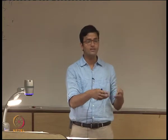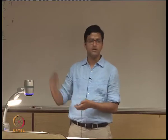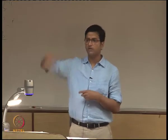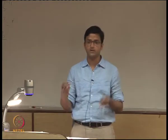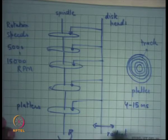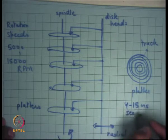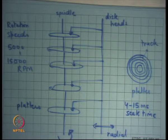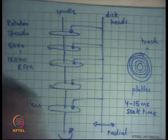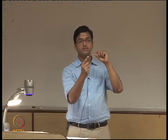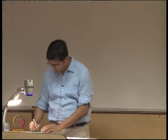The radial movement to reach the correct track is called seek time. Once you're on the track, the time it takes to actually reach the data you're interested in is called rotational latency. Rotational latency depends on chance — if the data is right there when you arrive, you read it immediately; if it just passed, you wait for a full revolution. On average, rotational latency is the time for half a revolution.